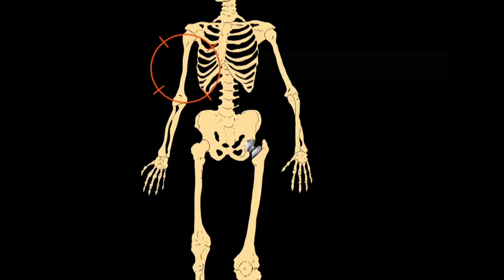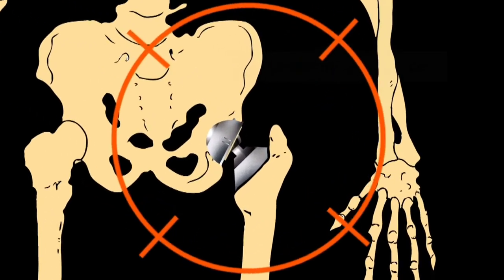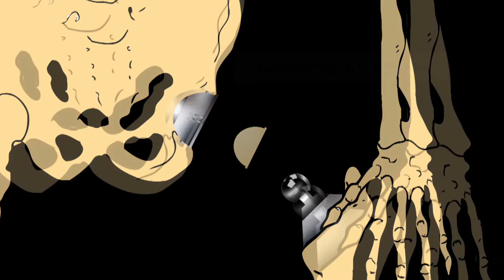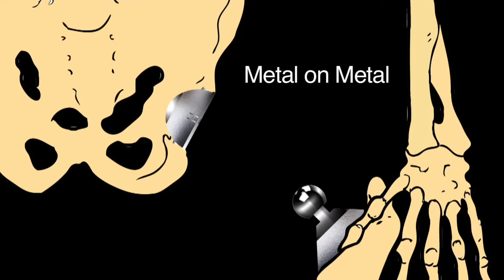Currently, there are only two types of artificial knee and hip joint replacements available. One contains metal against a plastic component. The other is metal against metal.